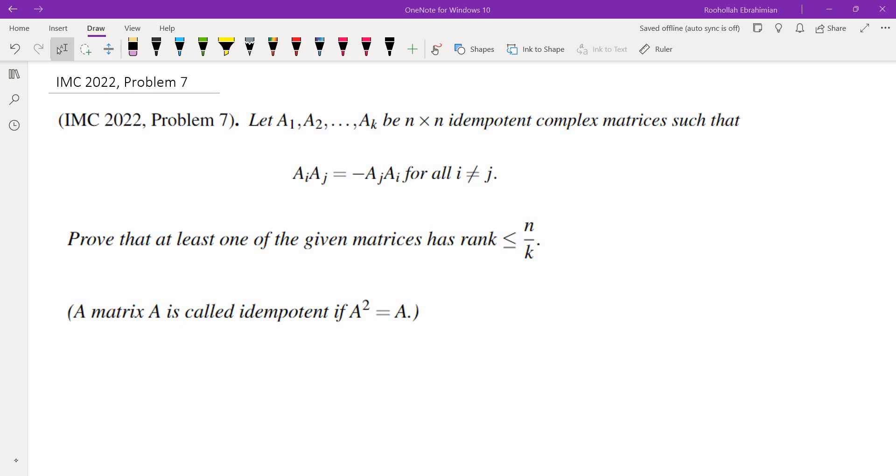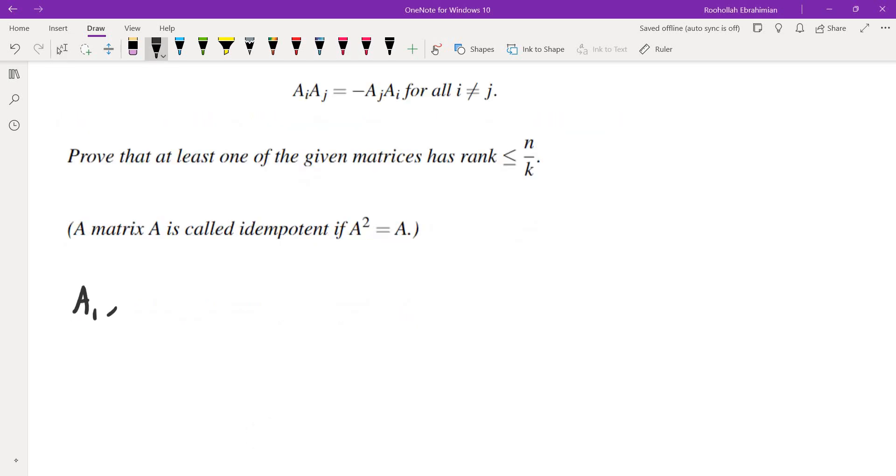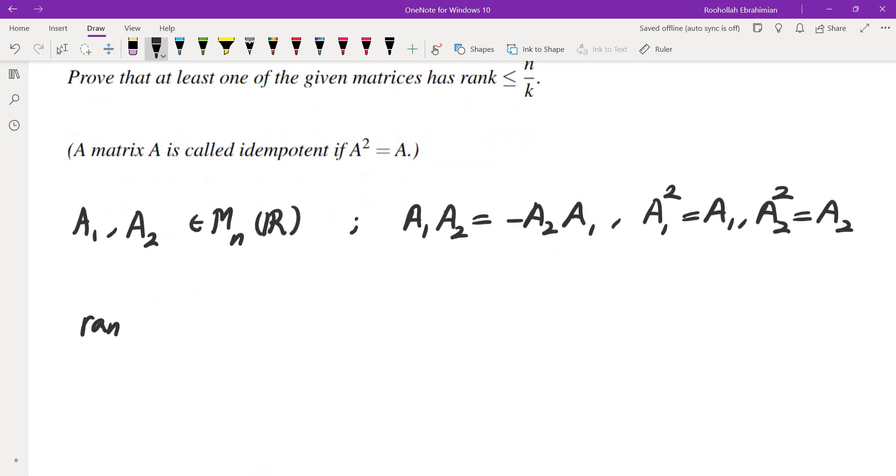So the first thing that I did was, let's try a few small cases. So if I take two matrices A1 and A2, and these are both n by n matrices, what I know is that A1A2 is negative A2A1. And I know that both of these are idempotent, which means A1 squared is A1, A2 squared is A2. And what I'm looking for is rank of A1 is less than or equal to n over 2 or rank of A2 less than or equal to n over 2. So this is what I'm looking for.